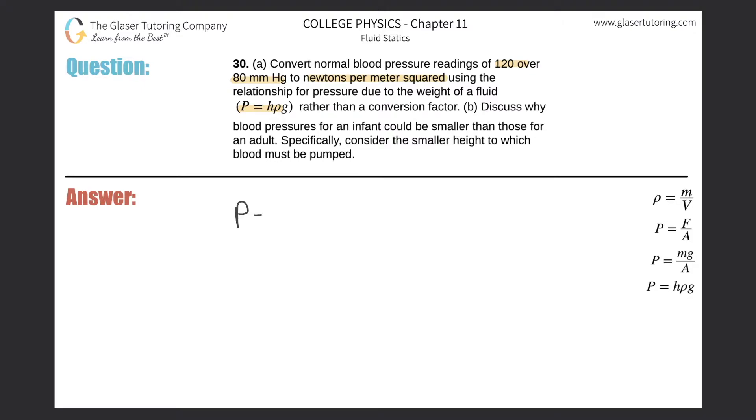All right, so here we have this formula. Pressure is equal to the height multiplied by the density multiplied by gravity. And we have to convert these independently.